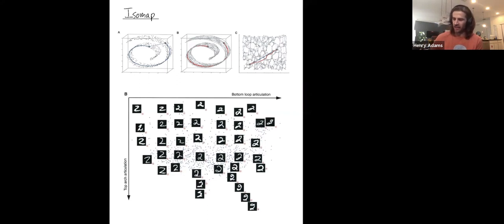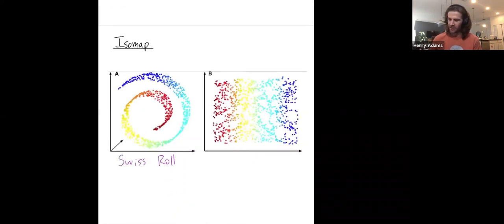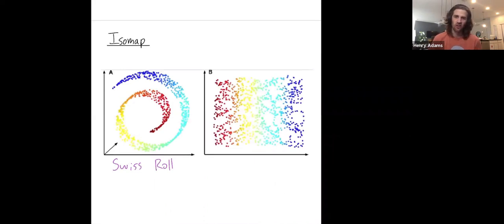So if you take a data set like the Swiss roll, let me show you a picture of it. If you take a nonlinear data set like the Swiss roll and you use isomap, you can unroll it in a way that preserves the intrinsic or geodesic distances between data points.